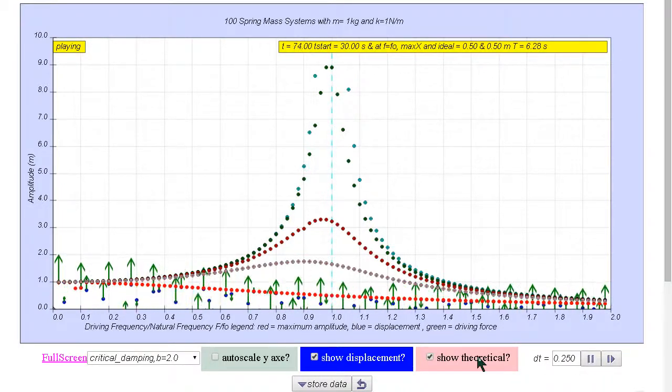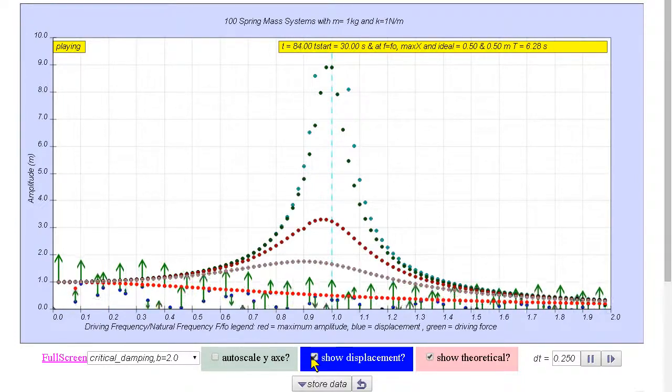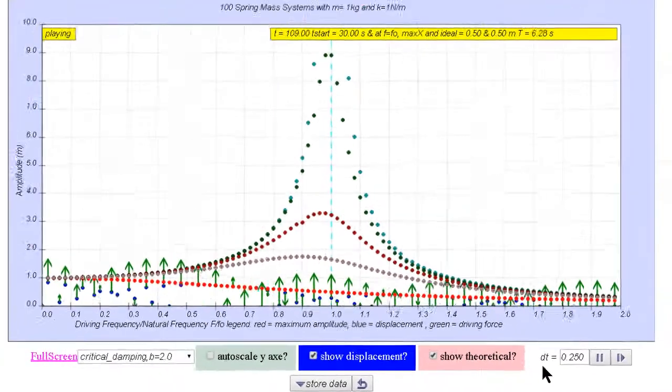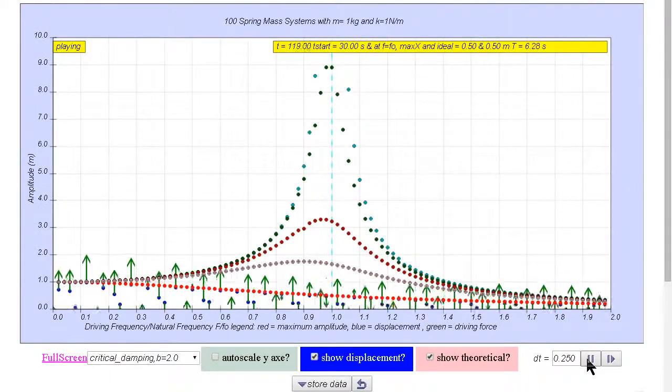Now we can uncheck the show displacement so that the graph is very nice and theoretical.